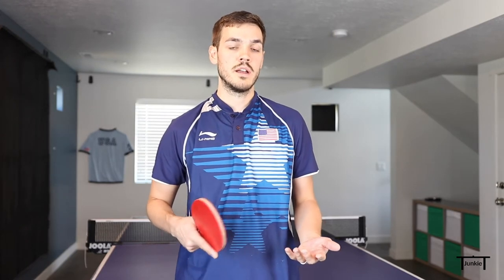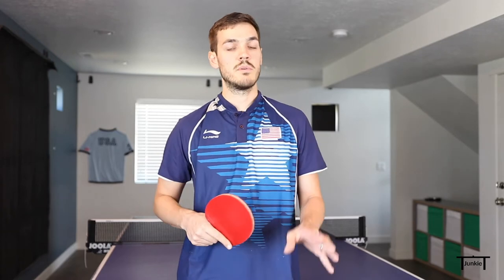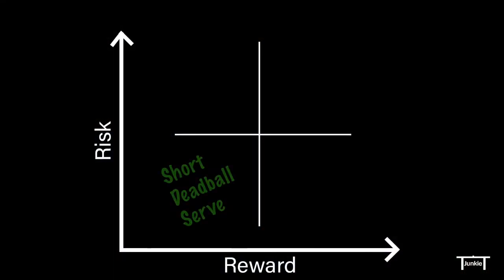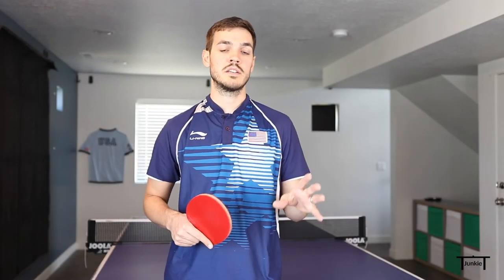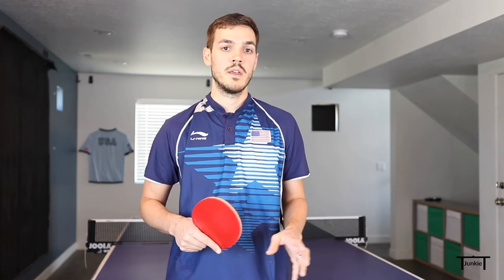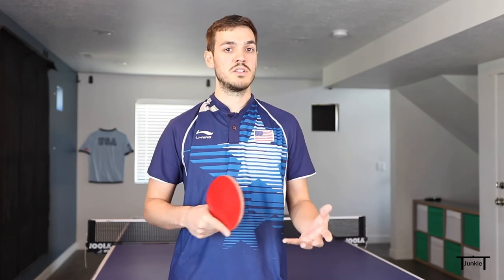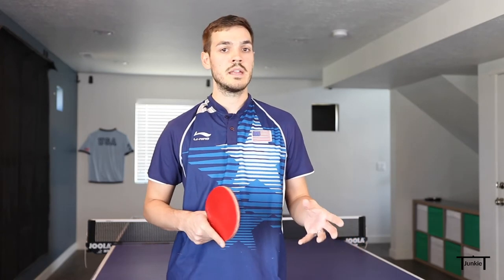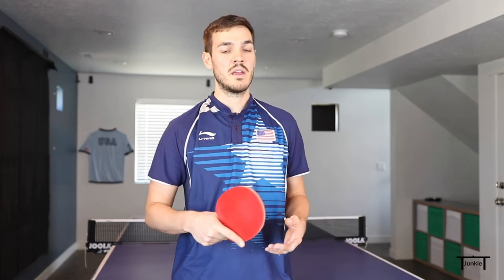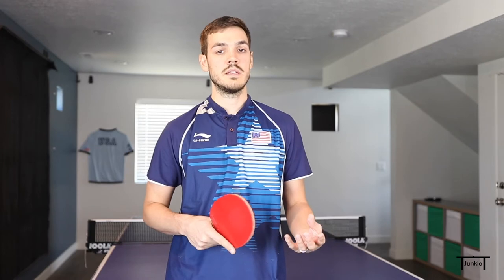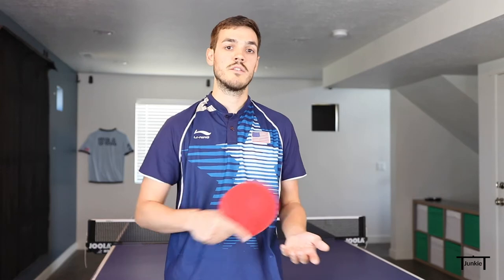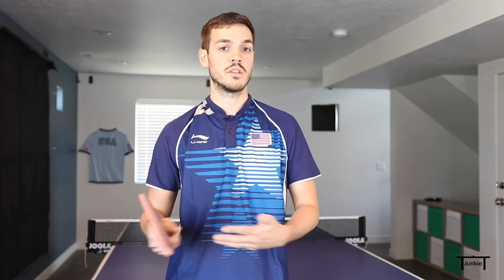Let's start with an example of a low-risk, low-reward serve. An example might be a short dead-ball serve. Because it's short, your opponent isn't going to be able to attack it, and with a dead-ball serve there's usually not a whole lot of motion going on, so it's going to be easy to control and to keep it short every time. But on the other hand, because it's a no-spin, you're probably not going to fool your opponent and they're going to be able to get that one back. Really what you're trying to do is follow it up with an attack of your own, so there's not really a whole lot of reward straight off of the serve — it's more of like a set-up for yourself later in the point.